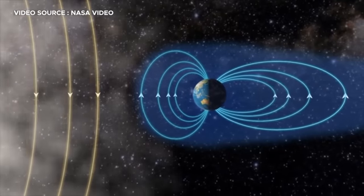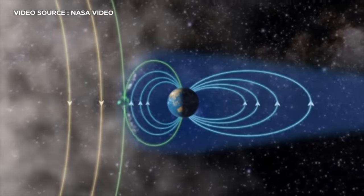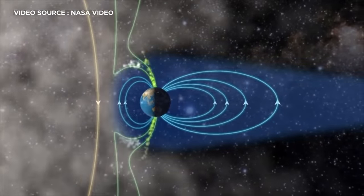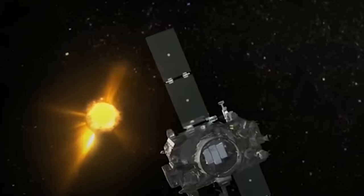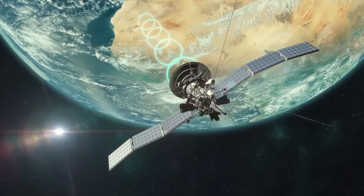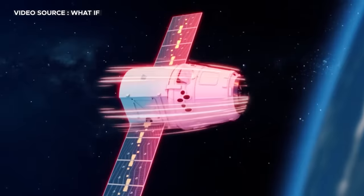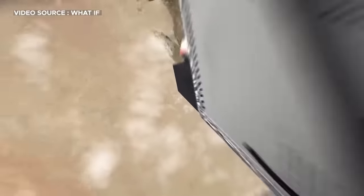In addition, a weakened magnetic field would offer less protection against solar radiation, increasing the risk of damage to the sensitive electronics onboard satellites. This radiation could induce short circuits or even cause permanent damage, rendering these satellites inoperable.